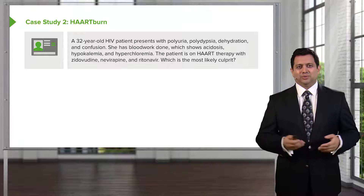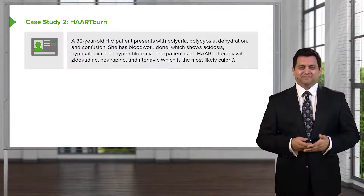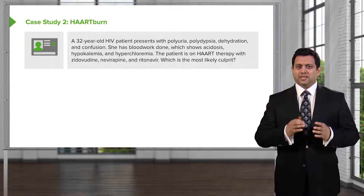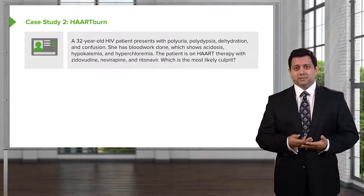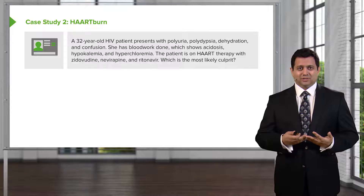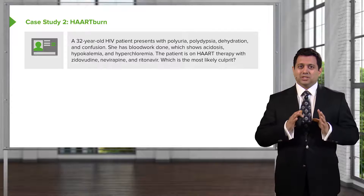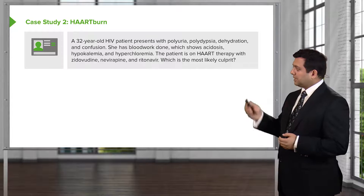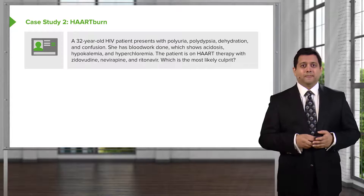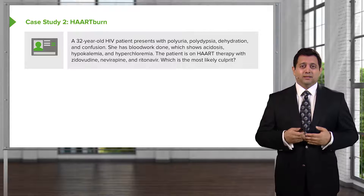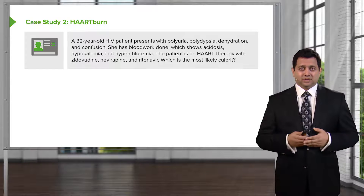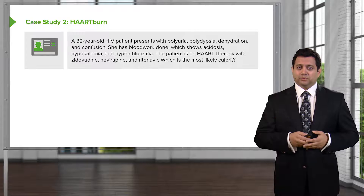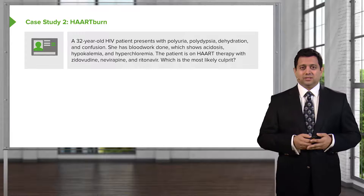Let's go on to a question that I like to call heartburn. A 32-year-old HIV patient presents with polyuria, polydipsia, dehydration, and confusion. She's had blood work done which shows an acidosis, hypokalemia, and hyperchloremia. The patient is on HAART therapy with three drugs. Which is the most likely culprit for this presentation?